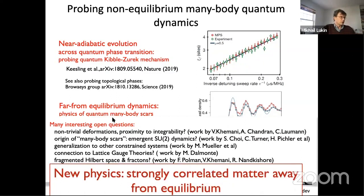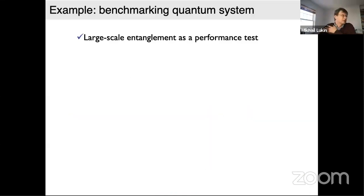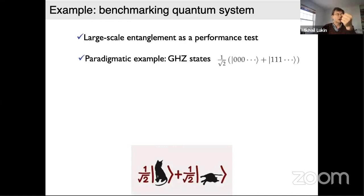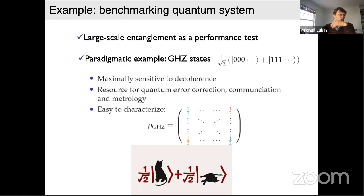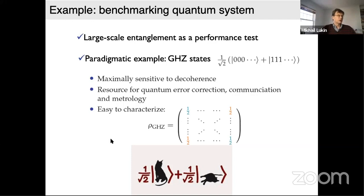In the spirit of these discussions, I want to explore whether this approach can benchmark a quantum system. One way to benchmark is to create a large-scale entangled state. One paradigmatic state is the cat state — also called the GHZ state — which is a superposition of all qubits in one state and all qubits in the orthogonal state. These states are important because they are maximally sensitive to decoherence, serve as resources for error correction, communication, and metrology, and are relatively easy to characterize.